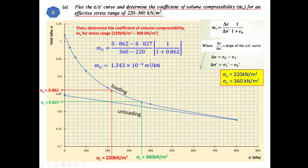So e₀ is 0.862, corresponding to the initial stress of 220 kN/m². For stress one at 360 kN/m², we locate that value on the graph, touch the loading curve again, and bring it to the y-axis. We get e₁ equal to 0.827. Now that we have both e₀ and e₁, along with the effective stress range, we can calculate the mv value.